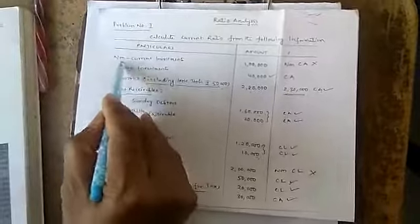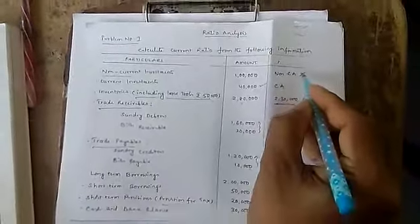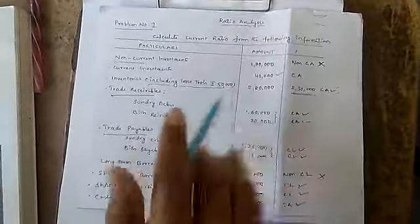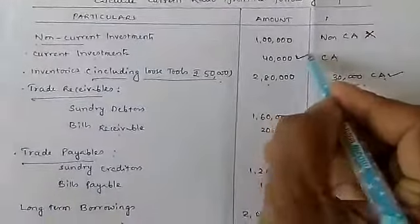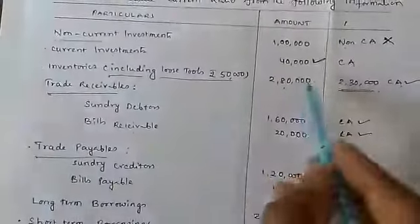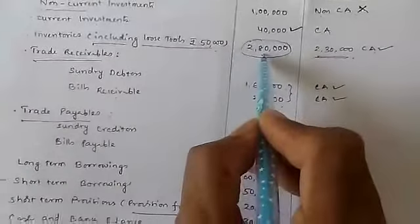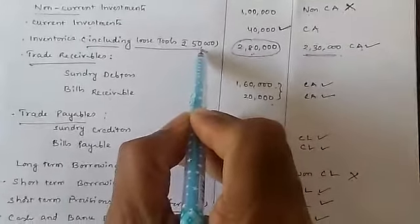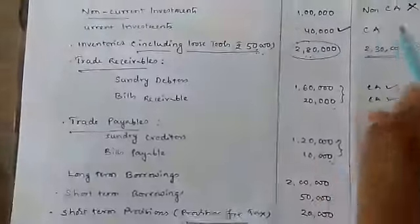Non-current investments — since it says 'non-current,' this is a non-current asset, so we do not include it in the current ratio calculation. Current investments of ₹40,000 is a current asset — put a tick mark. For inventories showing ₹2,80,000, we exclude loose tools of ₹50,000, so we consider only ₹2,30,000 for the current ratio.